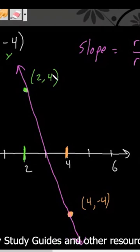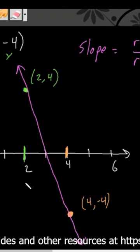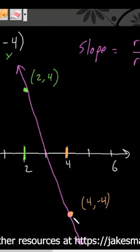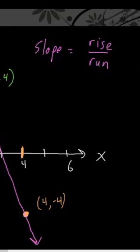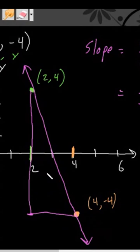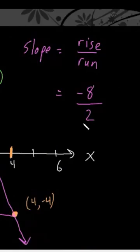If we're starting at y=4 and going down to y=-4 to get to this point, we go down 8 units. So our rise is -8 because we go down 8 units. We're going over 2 units, so our run is 2.